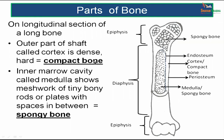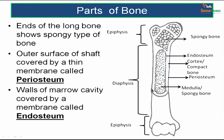The outer cortex is called compact bone. The inner marrow cavity is called the medulla. It shows a meshwork of tiny bony rods and plates with spaces in between — this type is called spongy bone. The end of the bone also shows spongy bone. The outer surface of the shaft is covered by a thin membrane called periosteum, and the walls of the marrow cavity are lined by a thin membrane called endosteum.